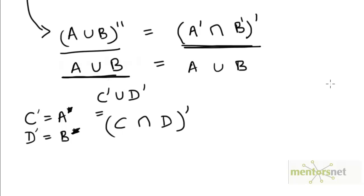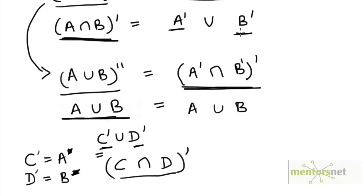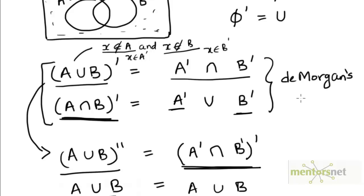Now because A and B were general sets, C and D are also general sets. So we can say that in general, if we take the complement of the intersection of two sets, that would be the union of the complements. Considering these two laws together, the effect of taking the complement is to invert the sign — if it's union it becomes intersection, and if it's intersection it becomes union — and the complement operation gets applied to both sets individually. These laws are known as De Morgan's laws.